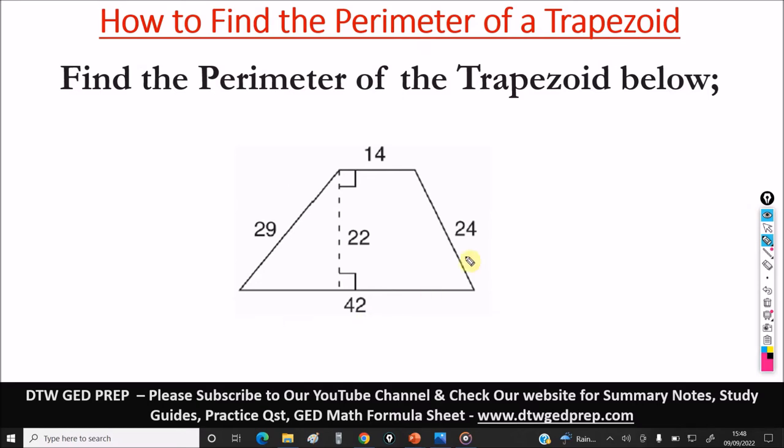Okay, so here we have a trapezoid here. It says find the perimeter of this shape below. Now when you see perimeter, it's all about the summation of the sides outside, not the internal shape, but the outside of the shape.